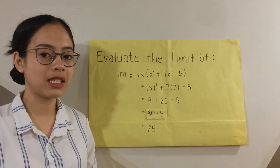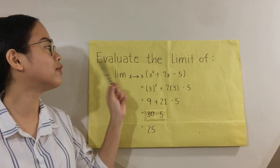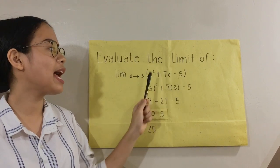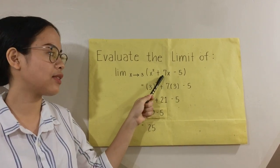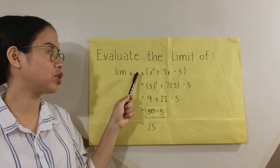So today, I'm going to be teaching you all how to evaluate the limit of x squared plus 7x minus 5 as x approaches 3.